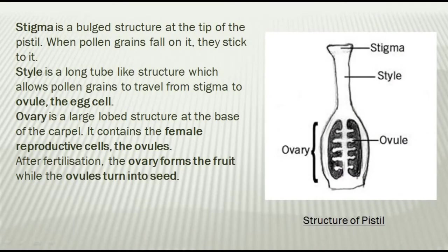Let's study in detail about the structure of the pistil. At the tip of the pistil there is a burst structure — this is the stigma. Stigma is the place where pollen grains fall and stick to it. Then there is a long tube-like structure known as the style, which allows the pollen grain to travel from the stigma to the ovule. The third part is a swollen structure — that is the ovary — which contains a small structure called the ovule. The ovule is the female reproductive cell.